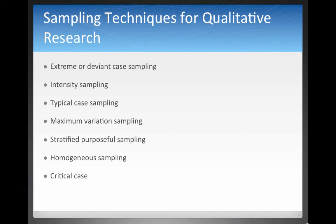Intensity sampling is where you have a sample that demonstrates a quality — say, really good teaching — such as teachers recognized within your school district as being good, but maybe not the National Teacher of the Year. Typical case sampling is when you just pick typical teachers. Maximum variation sampling involves picking participants at the extremes, like one of the best teachers and one of the worst teachers. Homogeneous sampling is when you pick participants who are all pretty much the same.